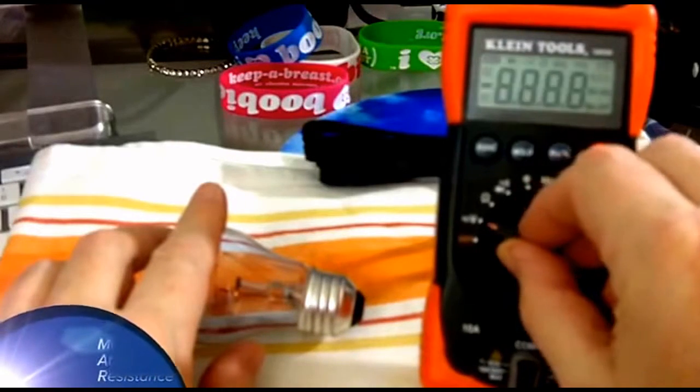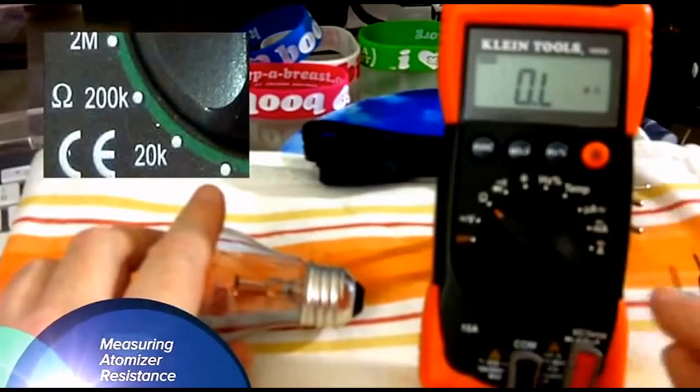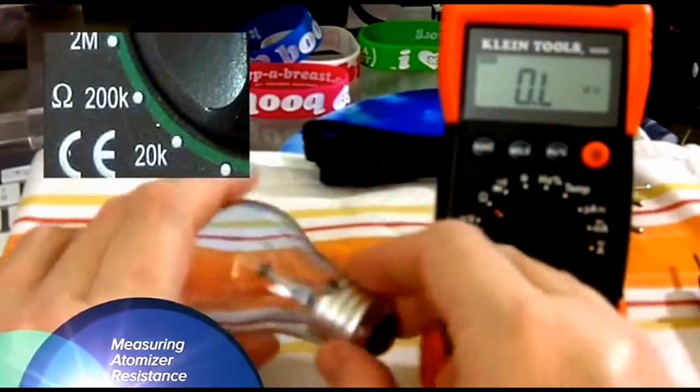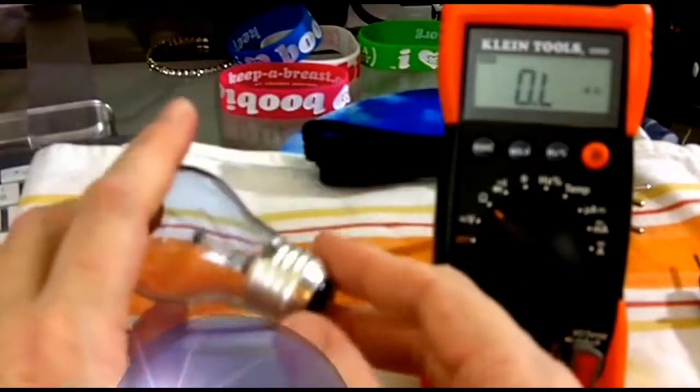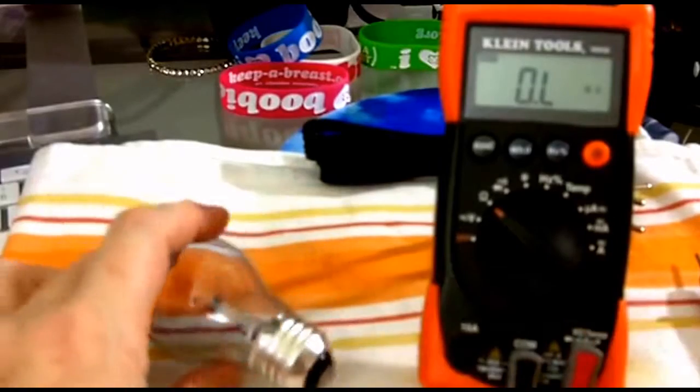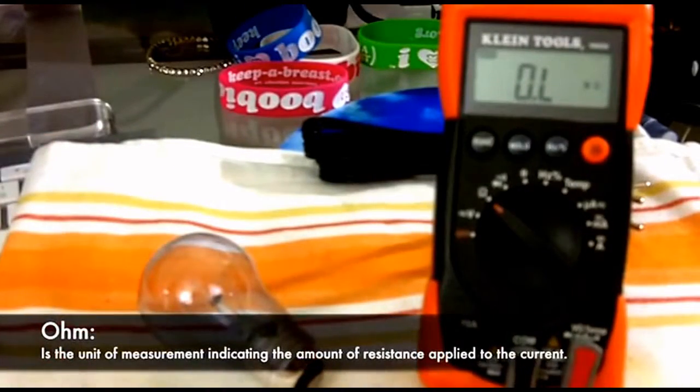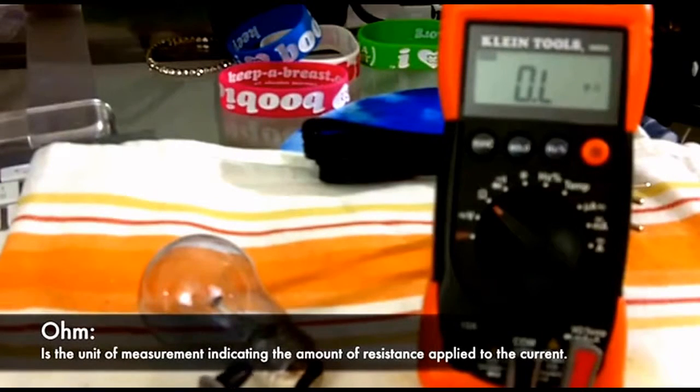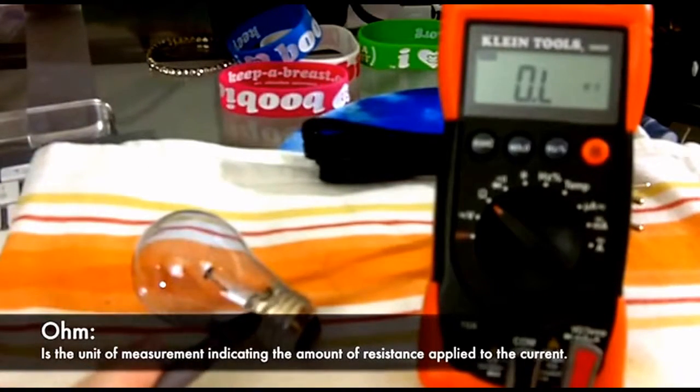The next thing that's really important for a vapor is measuring atomizer resistance or the ohms. Now this is a big old light bulb. The principle is the same. The threads are the ground. The center post is the positive. So following the same principles we used on the battery, we're measuring the amount of resistance that gets applied to the current by the atomizer or light bulb that's flowing through.